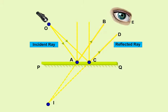Measure the angle of incidence and the angle of reflection. We can find that the angle of incidence is always equal to the angle of reflection. This is known as the law of reflection.